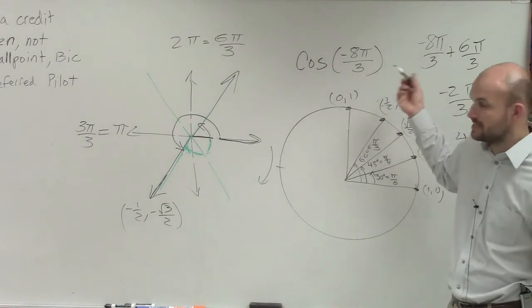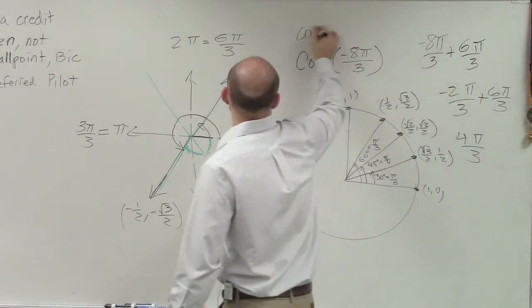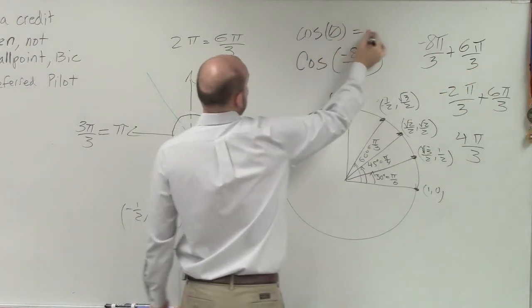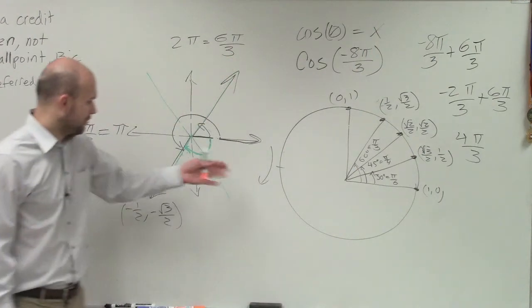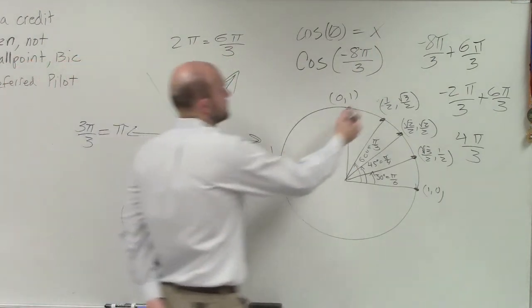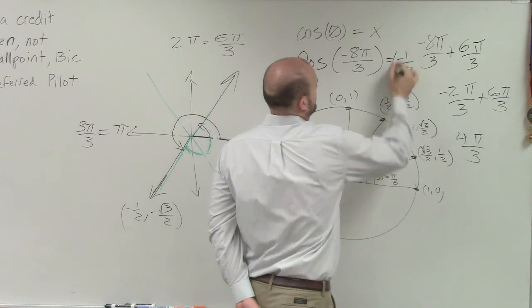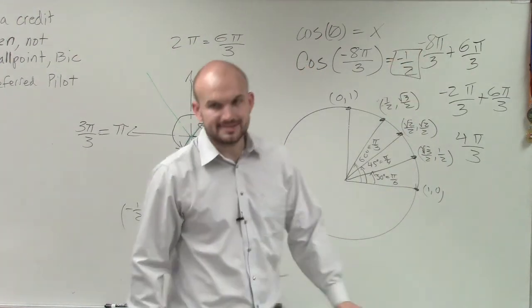So you have negative 1 half comma negative square root of 3 over 2. Then it's just asking us, what is the cosine? Well, remember cosine of an angle of theta equals x. So the x-coordinate of my point is negative 1 half. Done.